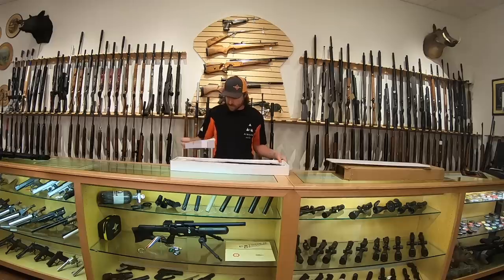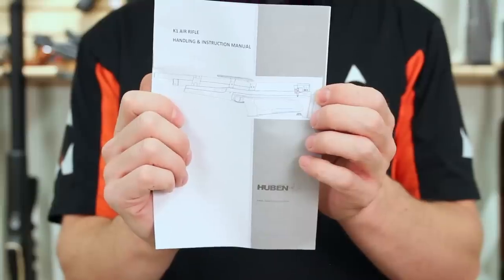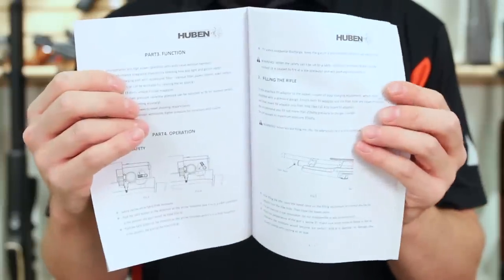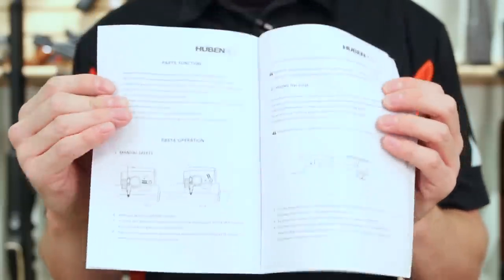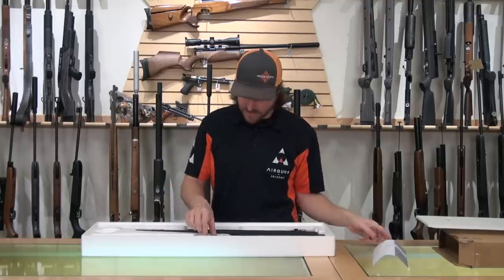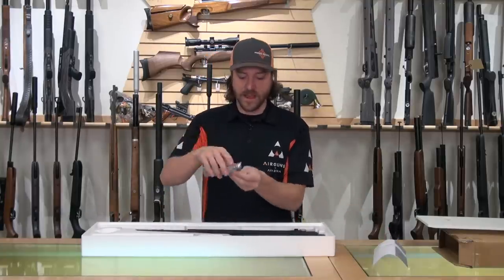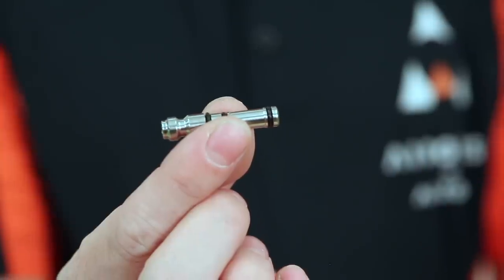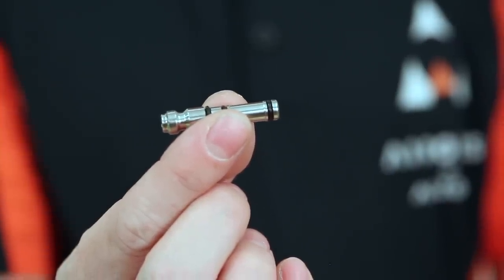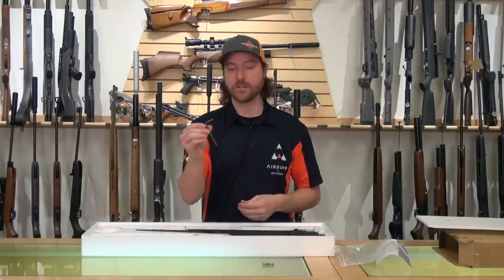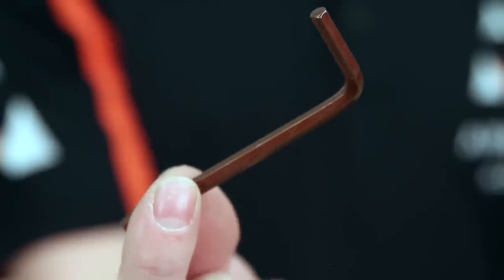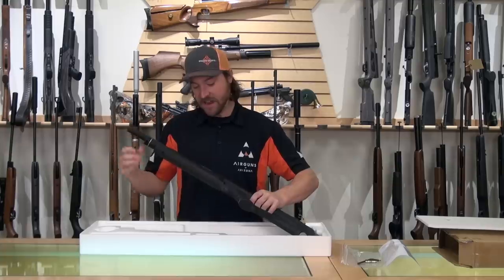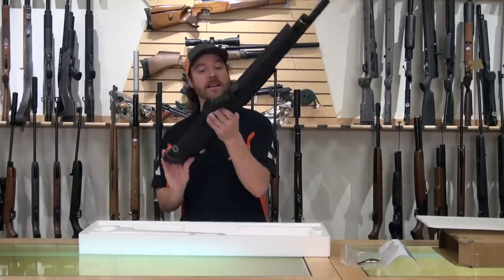Other than the rifle, you get two things: the owner's manual, which is always a good reference point for fill pressures, ways to increase and decrease the regulator, things like that. Then you get this bag which has two Allen keys and the fill probe. You have a four millimeter Allen wrench for adjusting the regulator and a two and a half millimeter for adjusting the trigger. Everything else is contained right here in the rifle.